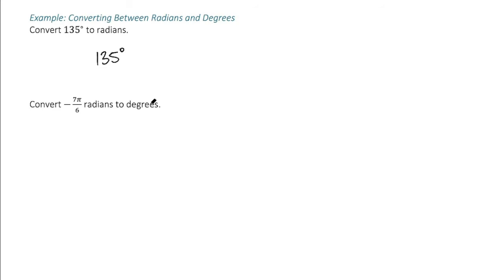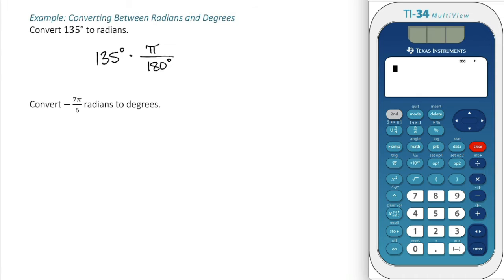To convert from degrees to radians, we multiply by pi over 180 degrees. So we take 135 times pi over 180.